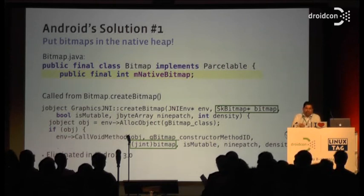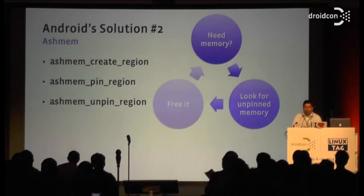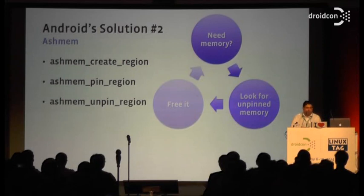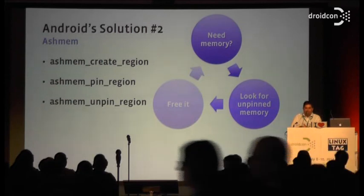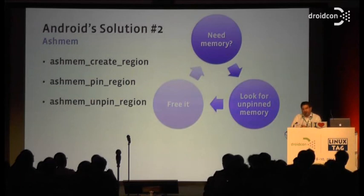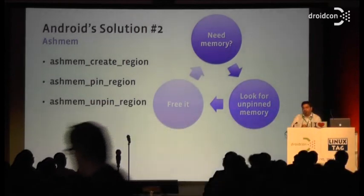So Google got rid of that. The next solution is to turn to the 'other heap.' One of the other heaps is called Ashmem, or Anonymous Shared Memory. This is a kernel feature added to the Linux version that Android runs on. There's a system call called Ashmem Create Region. If you create an Ashmem region, it belongs to you. You can pin it, and when you pin it, it operates like normal memory — the system will not reclaim it. Then you can unpin it. When you unpin it, the data is not immediately freed — whatever you've written there stays there unless the system actually needs that space, at which point it is freed.